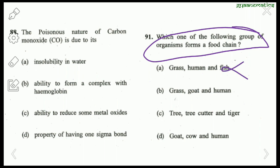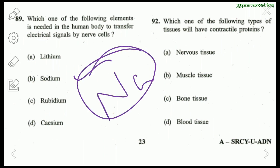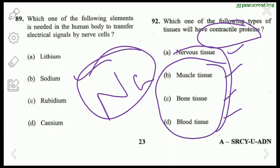Question 89: Which element is needed in the human body to transfer electrical signals by nerve cells? Out of lithium, sodium, rubidium, and cesium, sodium is present in nerve cells and helps in transfer of electrical signals. Next: Which type of tissue has contractile proteins? Contractile proteins are found in muscle tissue — out of nervous, muscle, bone, and blood tissue, muscle tissue is the answer.